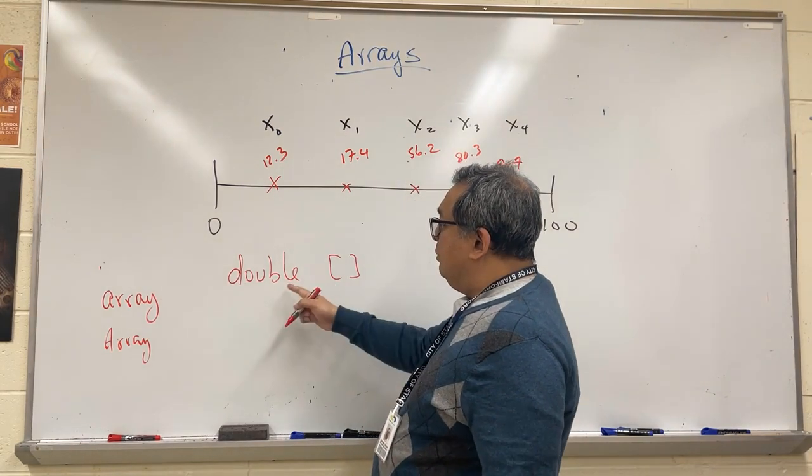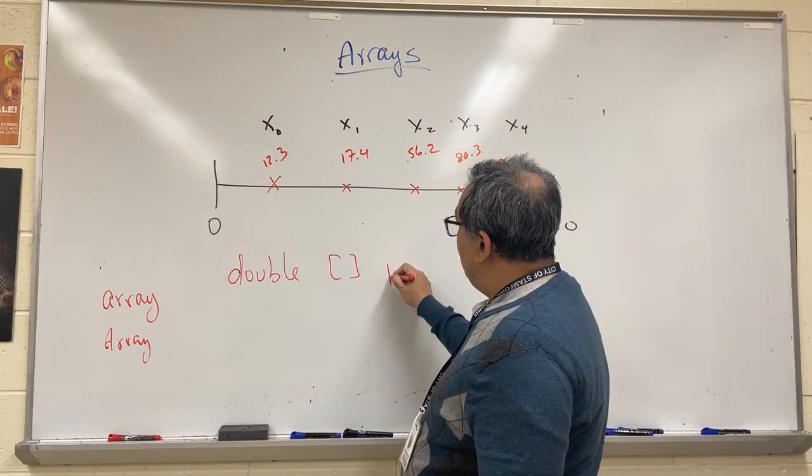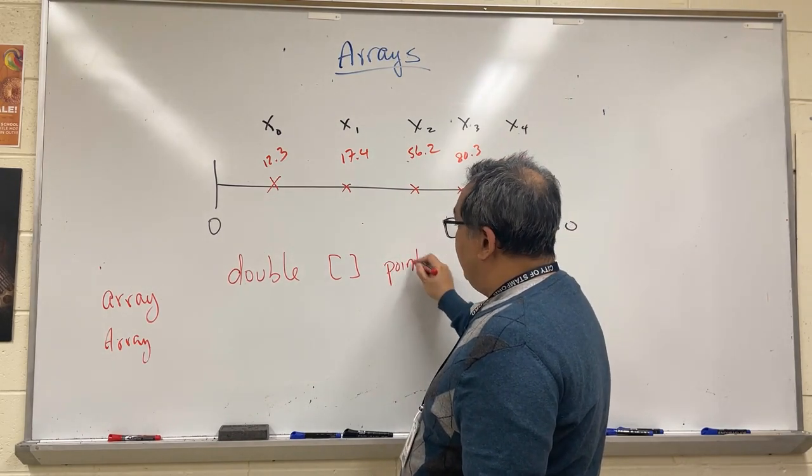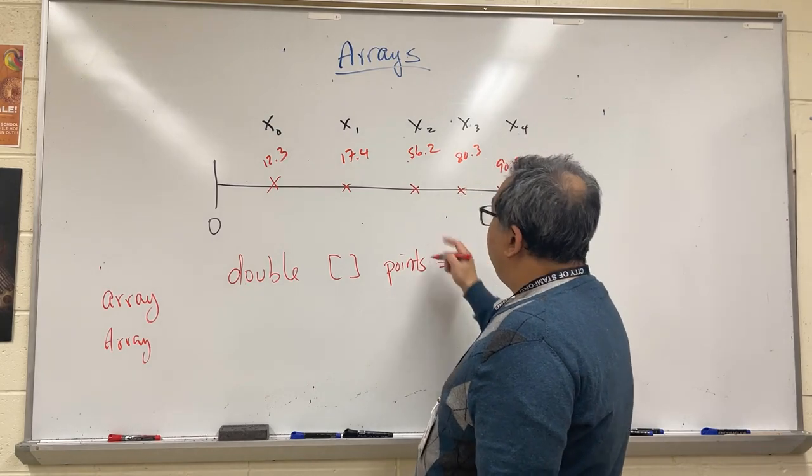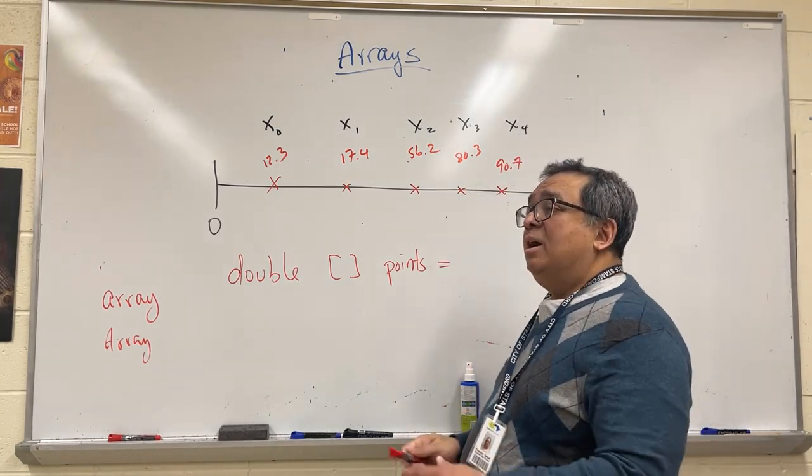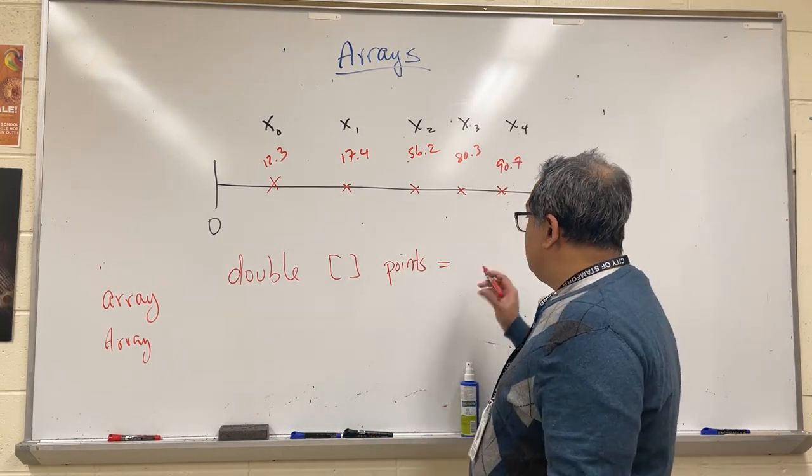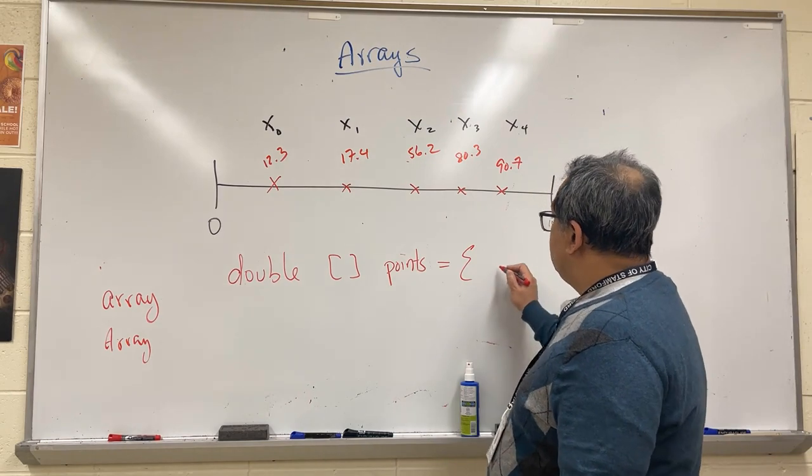If I was going to describe an array of decimal numbers, I would go like this and give it a name—maybe I could call it points, that's just a variable name. If I wanted to store these numbers, I have two different ways of creating an array. I'll show you the shortcut way right now. I can just go like this: 12.3, 17.4, 56.2, 80.3, and 90.7.